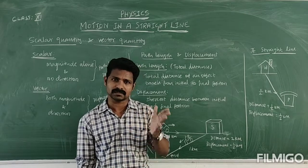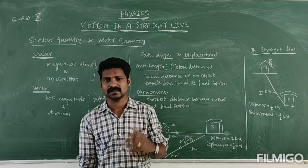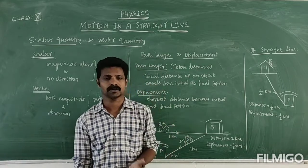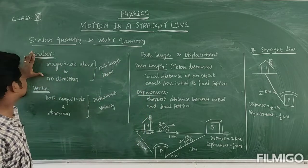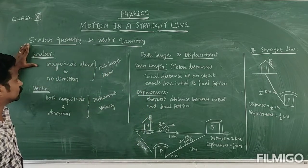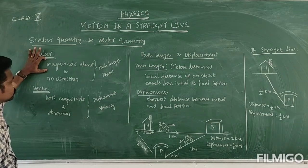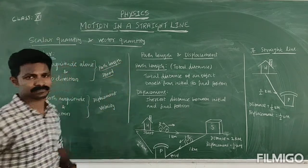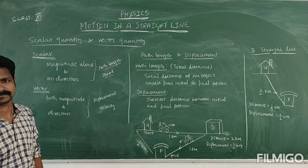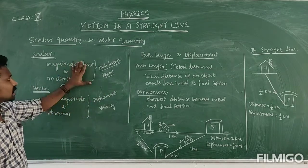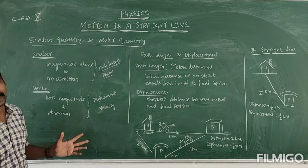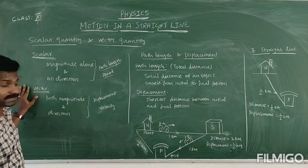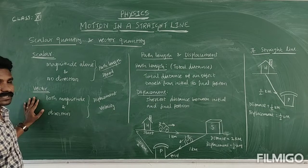In the second case, 50 km per hour in the north direction — here both magnitude and direction are mentioned. So based on that, scalar quantity is nothing but a quantity having only magnitude, with no specified direction. For example, path length and speed. Scalar means only magnitude, no direction.